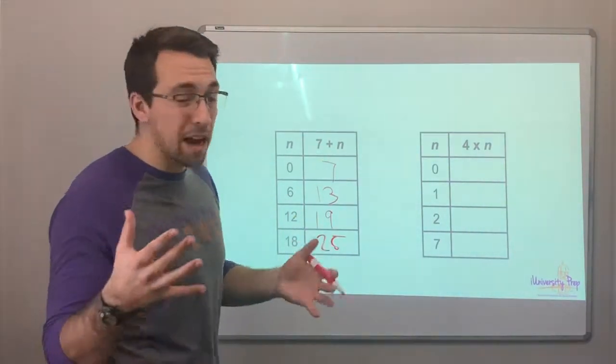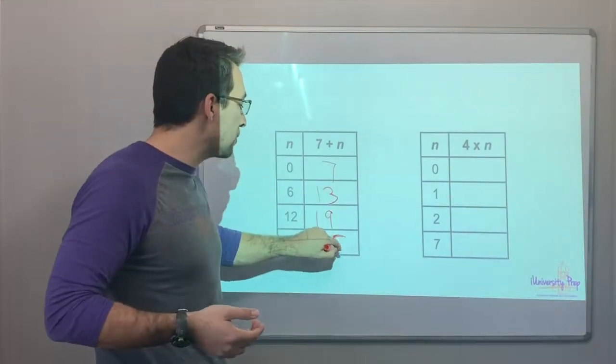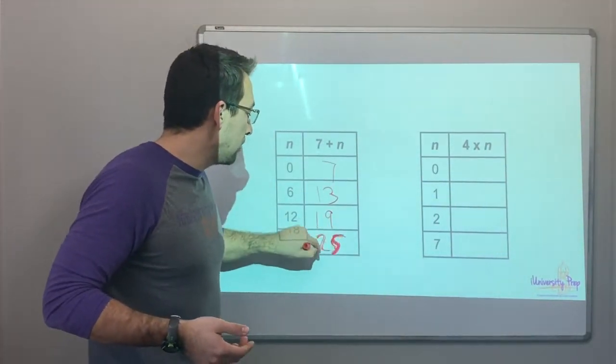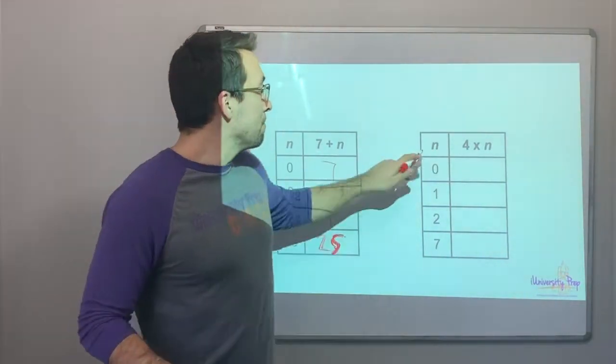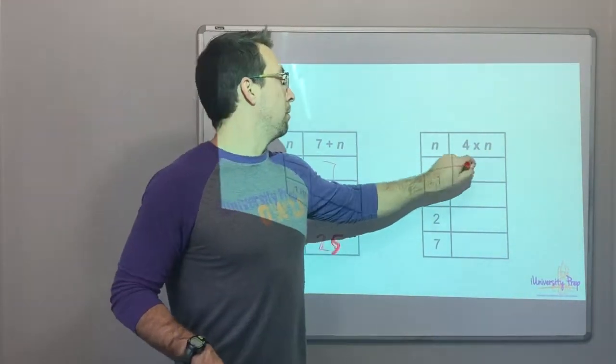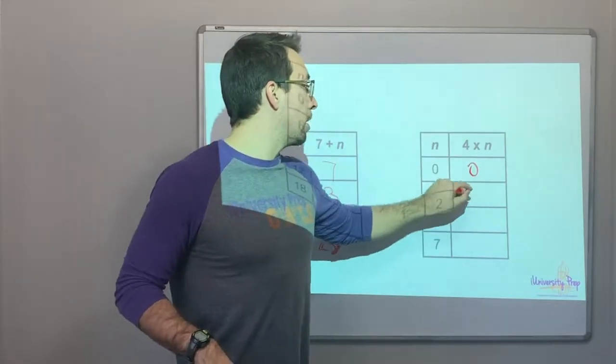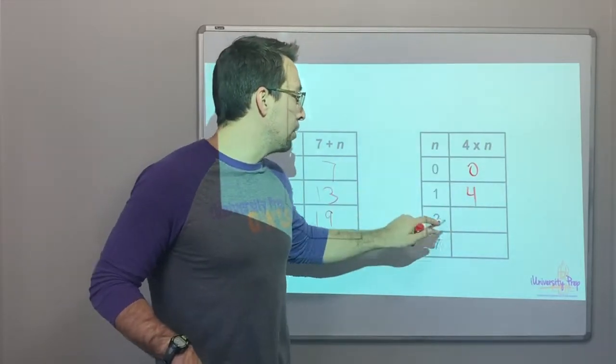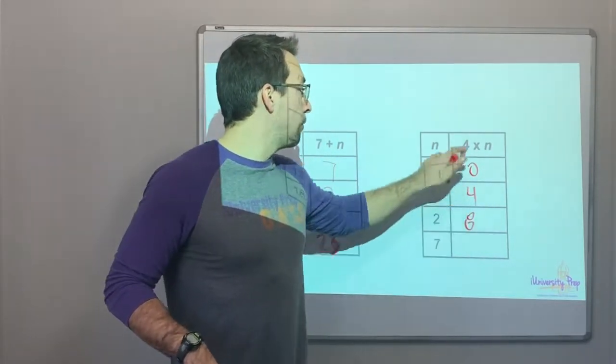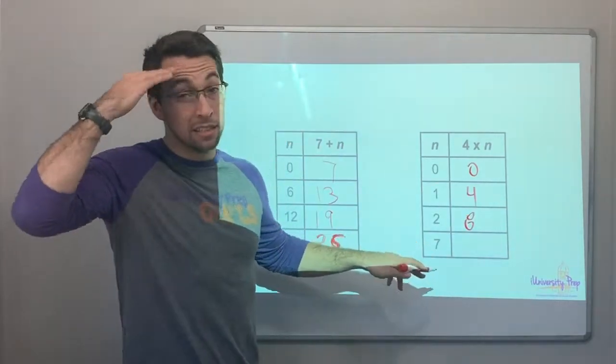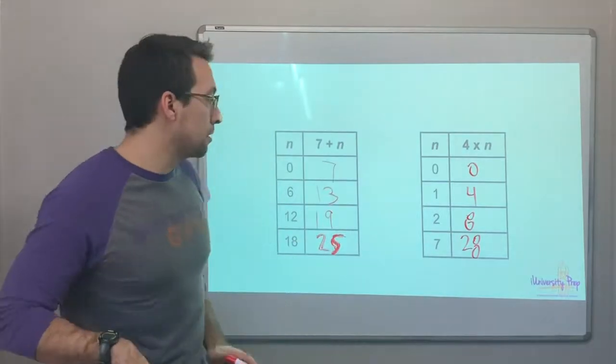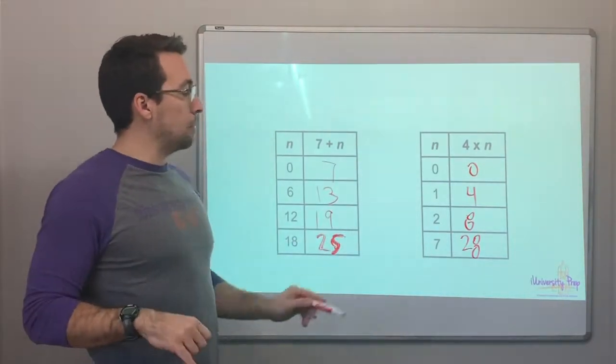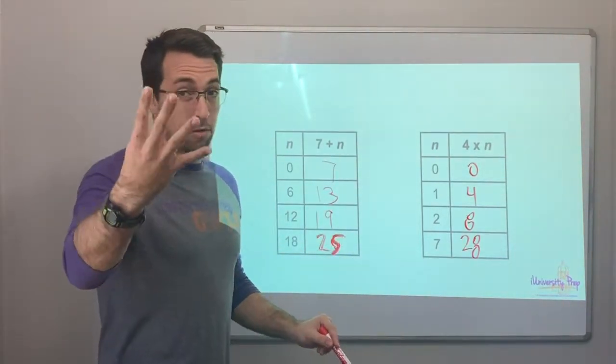If y'all are struggling to count in your head or multiply, use your fingers. You can always use your fingers to count. Always. 4 times 0, well, that's 0. 4 times 1. 4 times 2. 4 times 7 is 28. All right? We got it. You always have to know your times tables. So, it'll be 7, 14, 21, 28.